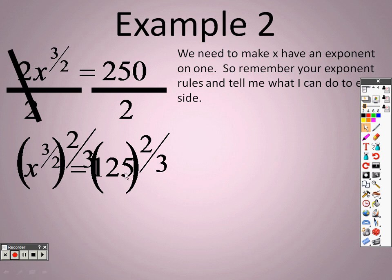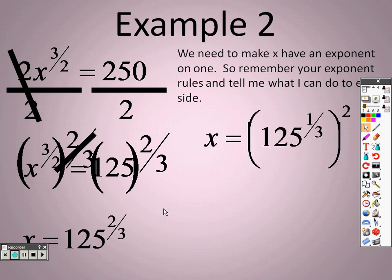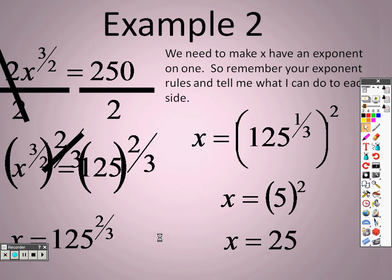Or, what you can do is you can rewrite this. And what we can do is, I can rewrite this as 125 to the 1 third squared. And the reason why I would do that is, maybe in your head you can remember that 125 to the 3rd, or the cube root of 125, is 5. So, really, what we end up with is 5 squared, and 5 squared is 25. Now, once again, you can still get 25 by typing that in on a calculator, but if you couldn't remember that, the point is you can still get the answer by doing it in your head as well.